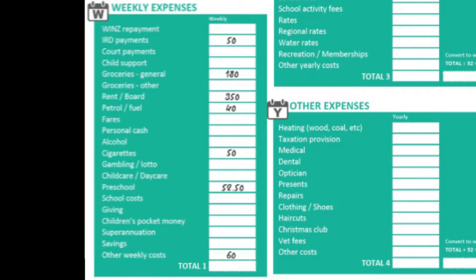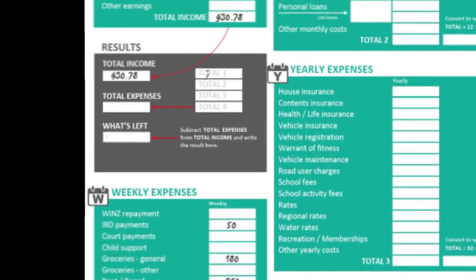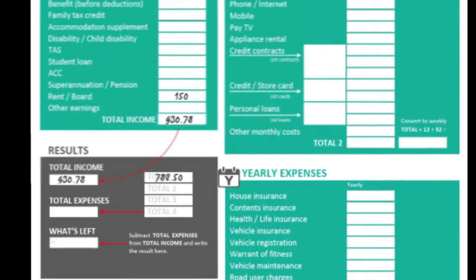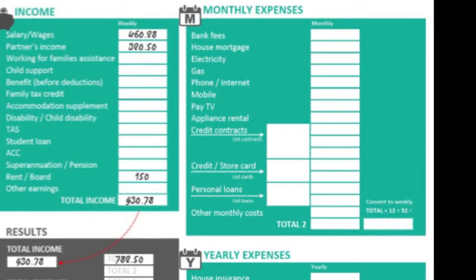Now on to monthly expenses. I have an overdraft fee of this much; my power and internet bills are usually around here; and my cell phone bill. Lucky for me, I don't have any loans. So let's take my monthly cost, multiply it by 12, and divide by 52 to find the weekly cost.